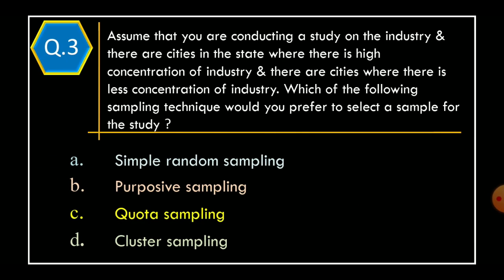Question 3. Assume that you are conducting a study on the industry and there are cities in the state where there is a high concentration of industry and there are cities where there is a less concentration of industry. Which of the following sampling techniques would you prefer to select a sample for the study? Option A, Simple Random Sampling. Option B, Purposeful Sampling. Option C, Quota Sampling. Option D, Cluster Sampling. And correct option is Option D, Cluster Sampling.